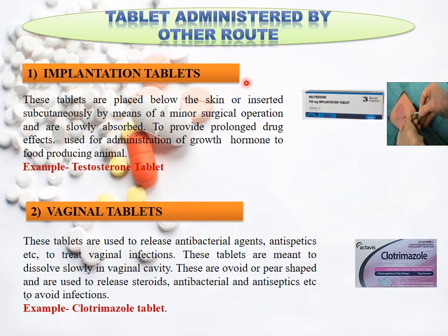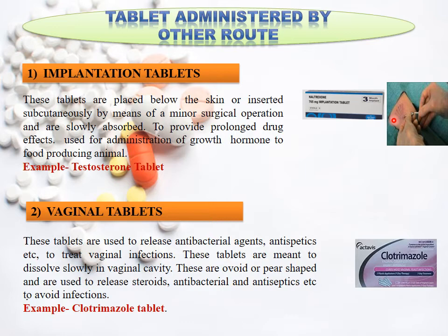Tablets administered by other routes are classified into implantation tablets and vaginal tablets. Implantation tablets are placed subcutaneously under the skin via surgical operation, and the drug is inserted. These types of implantation tablets are used in food-producing animals. An example is testosterone tablet. Vaginal tablets are mainly used to treat vaginal infections. They contain antibacterial agents that cure vaginal infections. Their shape is mainly ovoid or pear-shaped.